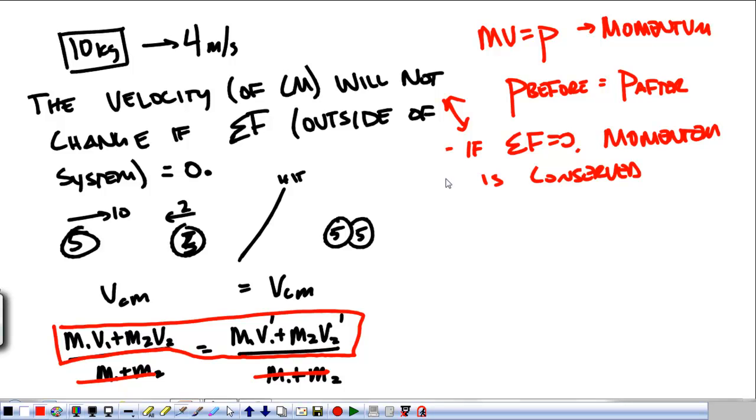So what we can do here is say that 5 times 10 plus 5 times negative 2 is equal to, if they stick together, 5 plus 5 times their final velocity. So 40 is equal to 10 times the final velocity. In this case, after they hit and stick, they're going to move off with a final velocity of 4 meters per second.